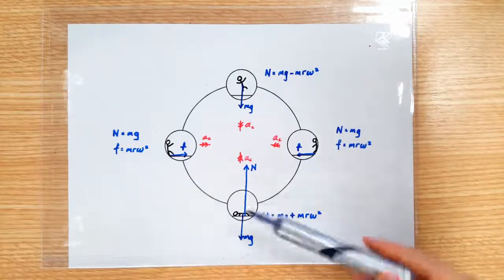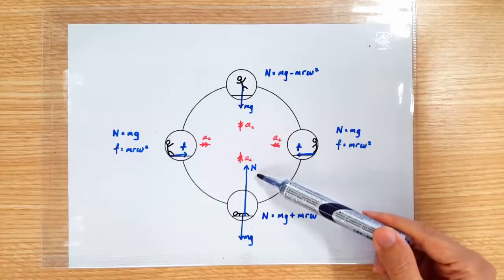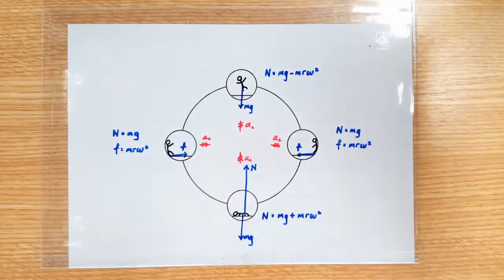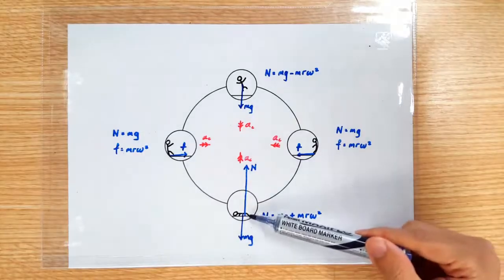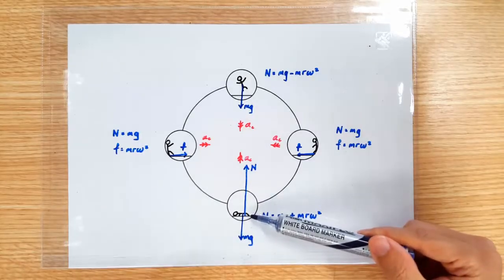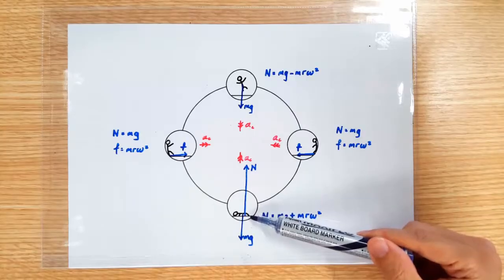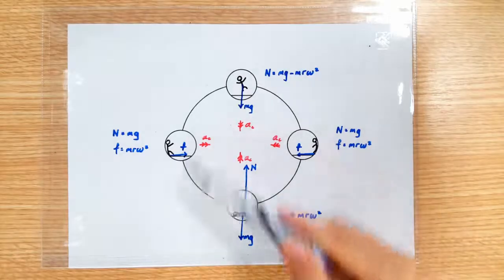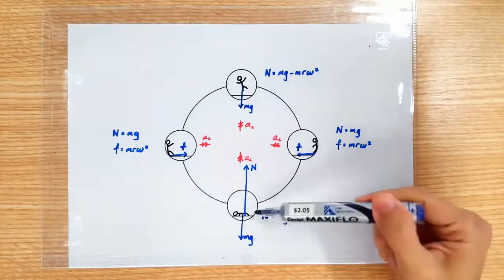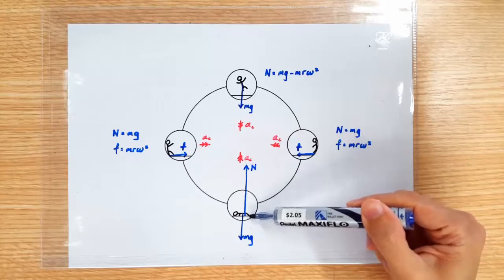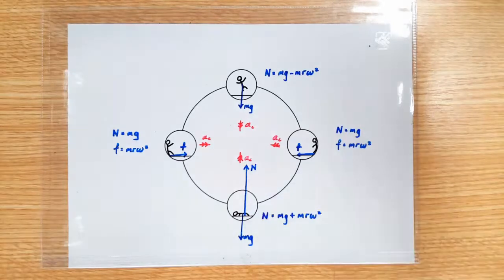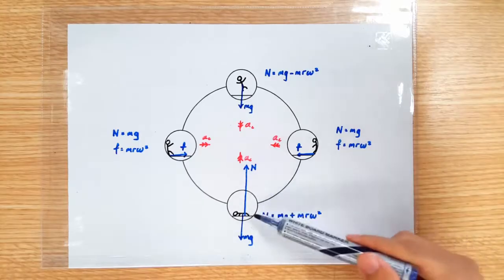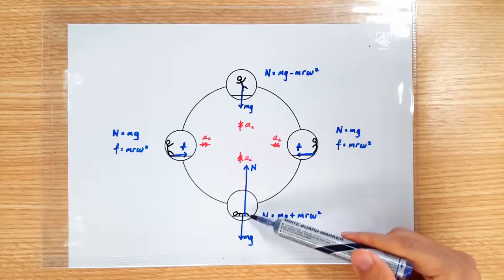At the bottom position, the normal contact force will be 2mg, which means this guy is feeling twice his normal weight. If the man tries to do a push-up at the bottom position, he'll find it is next to impossible, because he has to exert a force of 2mg on the floor just to keep himself in circular motion — he has to press harder than 2mg to push himself off the floor. Most people's muscles are not able to exert a force of twice their weight, so this guy is going to be pressed onto the floor.